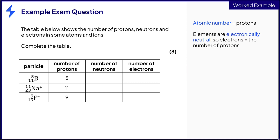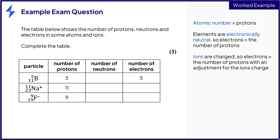Elements have no overall charge, which means that boron has five negative electrons to cancel out the five positive protons. For the number of electrons in an ion, you also have to consider the charge. A sodium atom would have eleven electrons, but it is a sodium ion with a single positive charge, which means that it has lost an electron. Therefore, the sodium ion has ten electrons. The fluorine atom would have nine electrons, but it is a fluoride ion with a single negative charge, which means that it has gained one electron. Therefore, the fluoride ion has ten electrons.